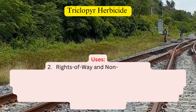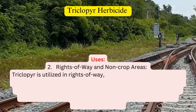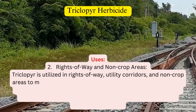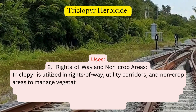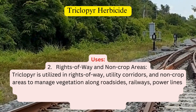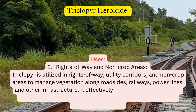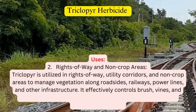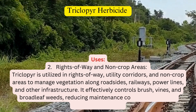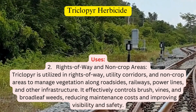2. Rights-of-way and non-crop areas. Triclopyr is utilized in rights-of-way, utility corridors, and non-crop areas to manage vegetation along roadsides, railways, power lines, and other infrastructure. It effectively controls brush, vines, and broadleaf weeds, reducing maintenance costs and improving visibility and safety.